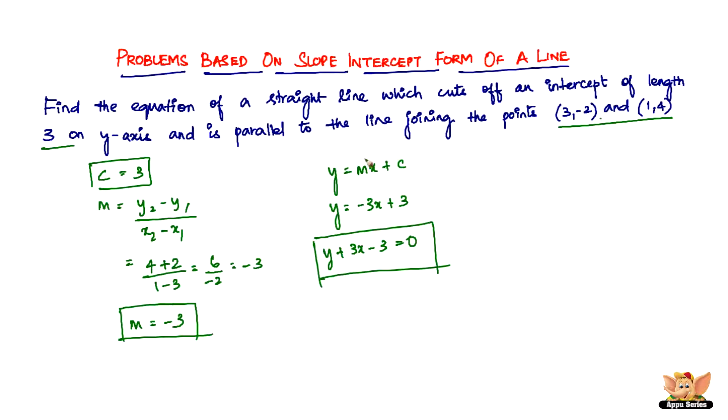Before I conclude this video, let me quickly brief you about the whole problem again. In this question, we have directly got the value of the intercept c that we need to substitute in the equation y equals mx plus c. But this m's value, we haven't got it directly. The two points given were not of the line in question, but of the line that was parallel to the line in question.